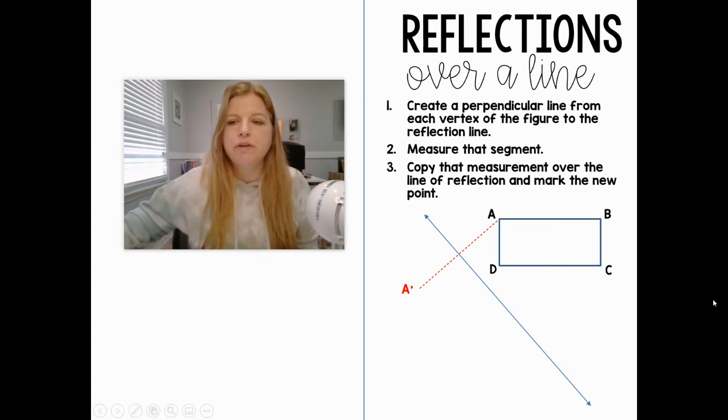Then you would need to do that with each point on your figure. So then you would take your ruler or your protractor, create a perpendicular line from this point through the line going up, crossing through that line, measure this length from B to the line, and then copy that exact length onto the other side. That's where B prime would be.